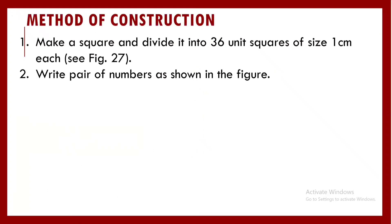Let us go to the method of construction. An easy activity. I make a square and divide it into 36 unit squares of size 1 centimeter each. So instead what you can do is, the easier way would be you take a sheet of the mathematics notebook, it's the squared sheet, or you can take a graph sheet also if you want to, and cut it into 6 by 6. So that way you will be getting directly a sheet with the complete table drawn. And I'll write the pair of numbers as shown in the figure.